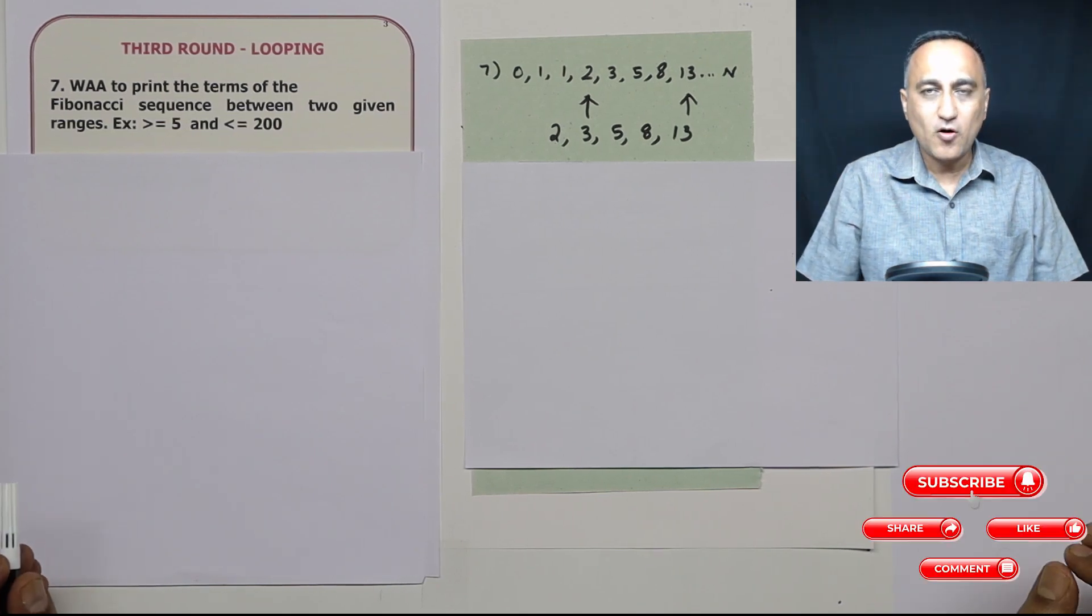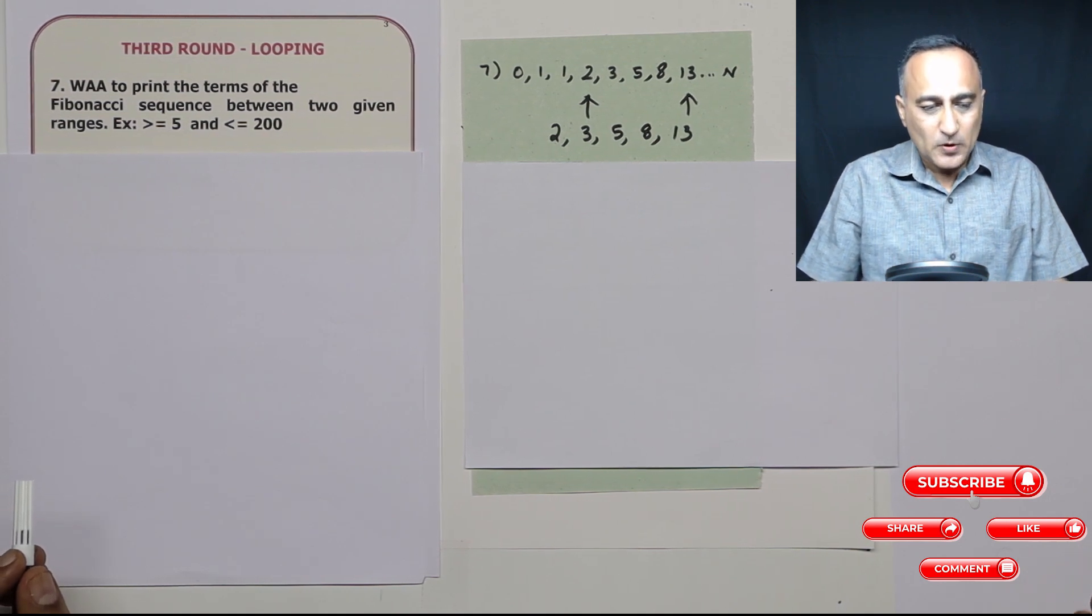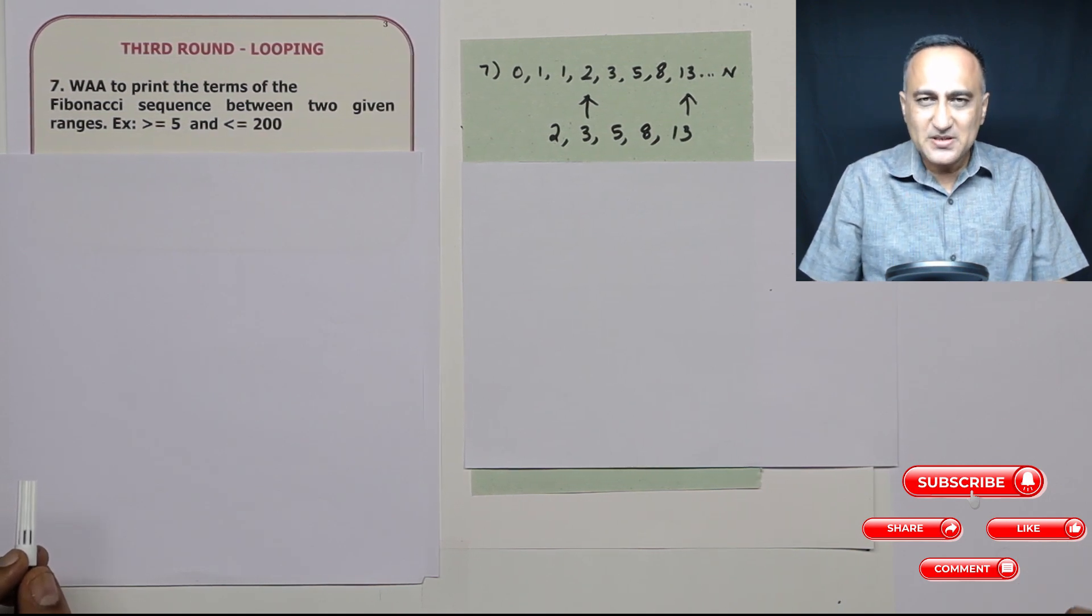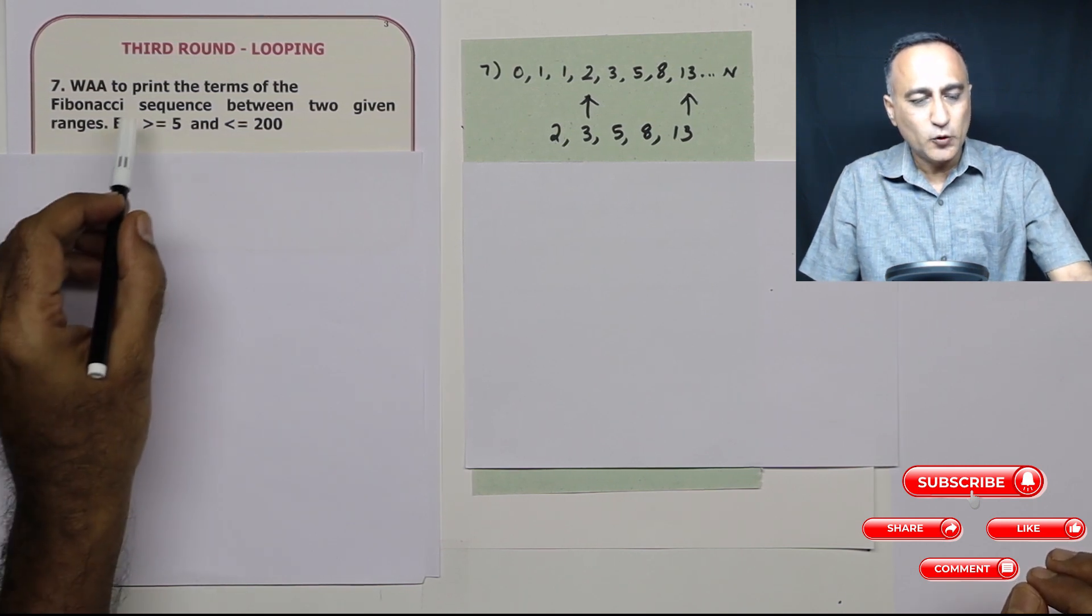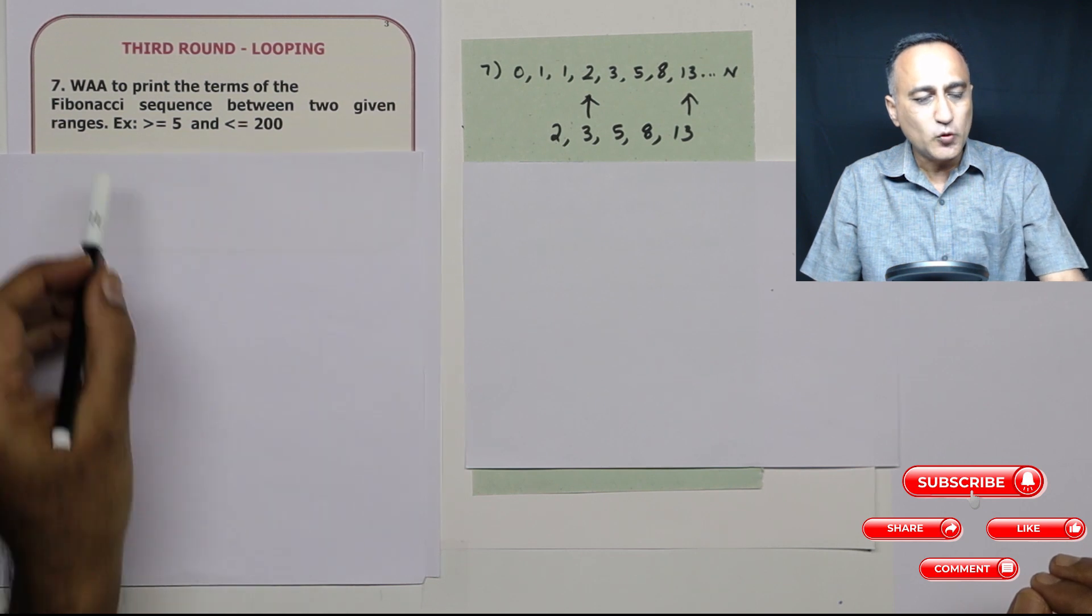This is the third round of the assignments on looping or repetition logic using algorithms. So in problem number seven, I am asking you to write an algorithm to print the terms of the Fibonacci sequence between two given ranges.